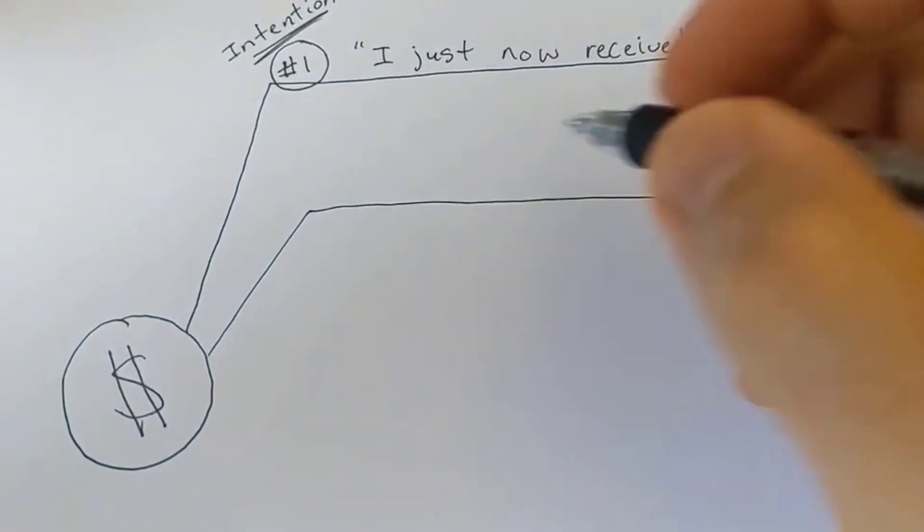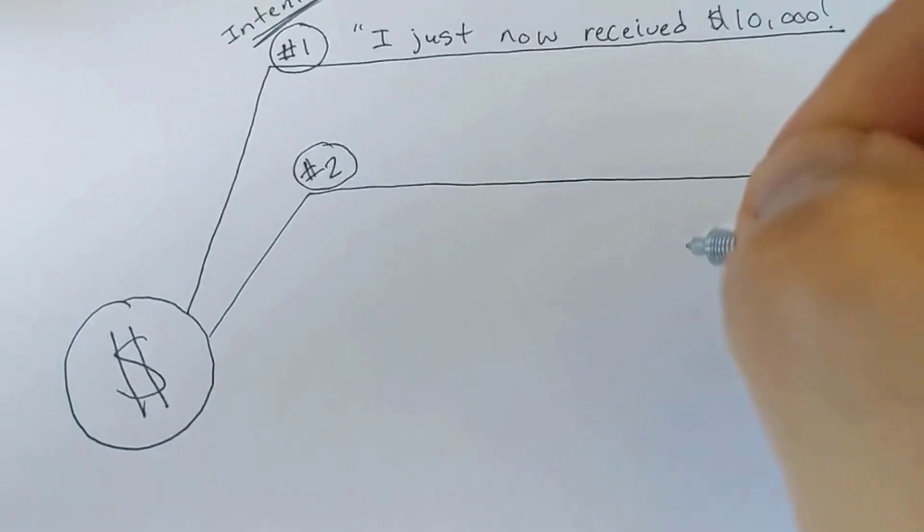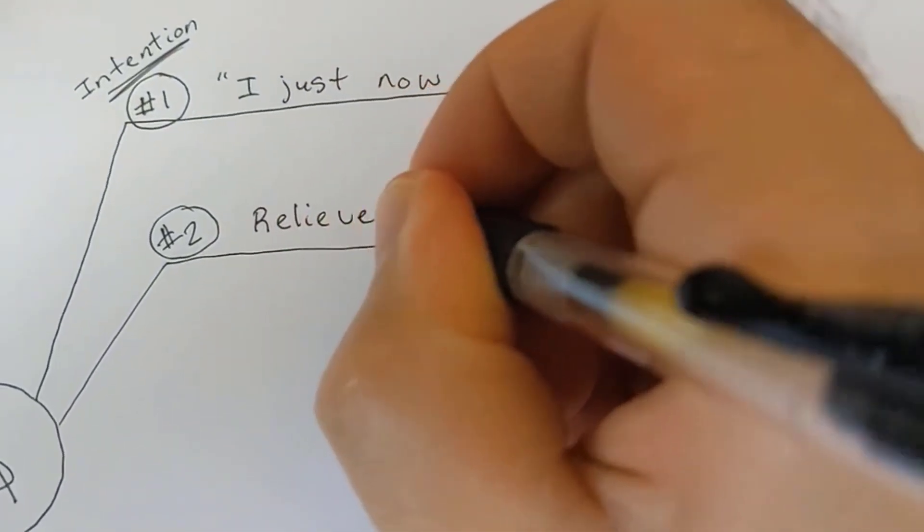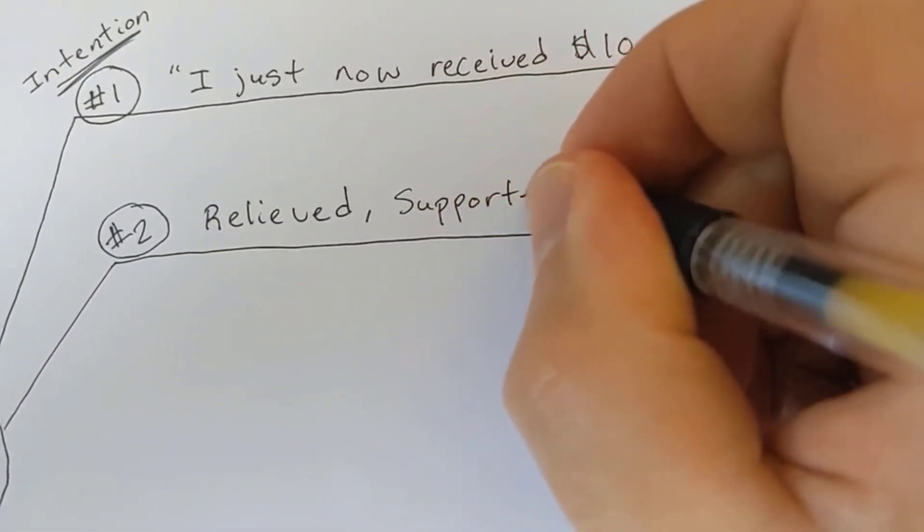Make sure that's in present tense. Draw a line from the circle and write down number two. Now, number two is going to be all about the feelings. So if you did manifest the $10,000 or whatever you wrote down, what three main feelings would you have?